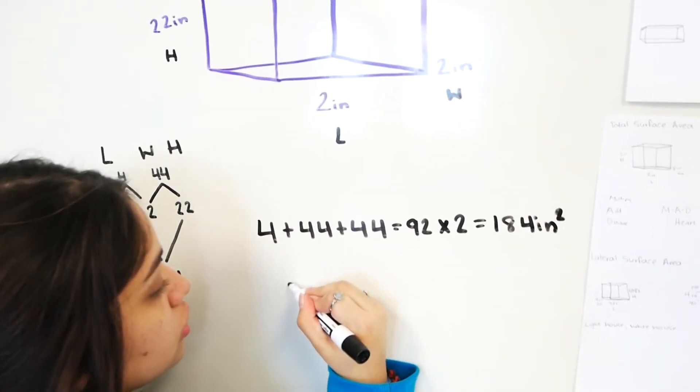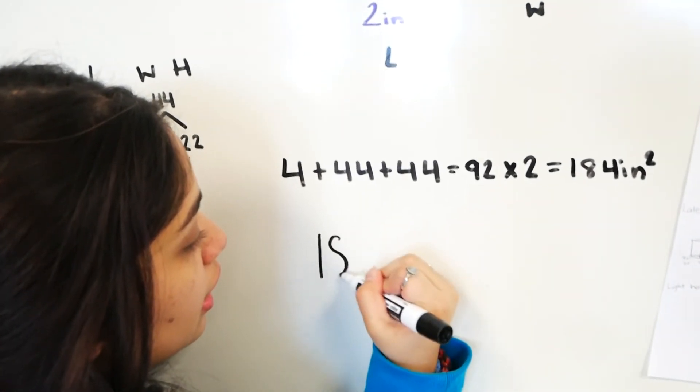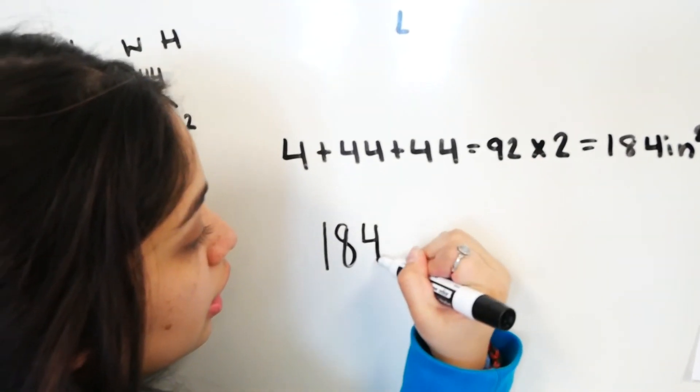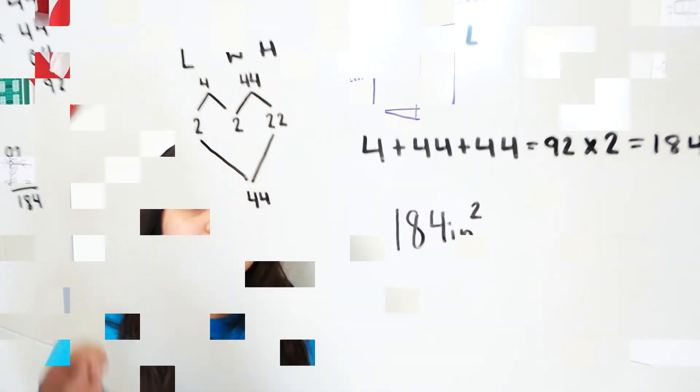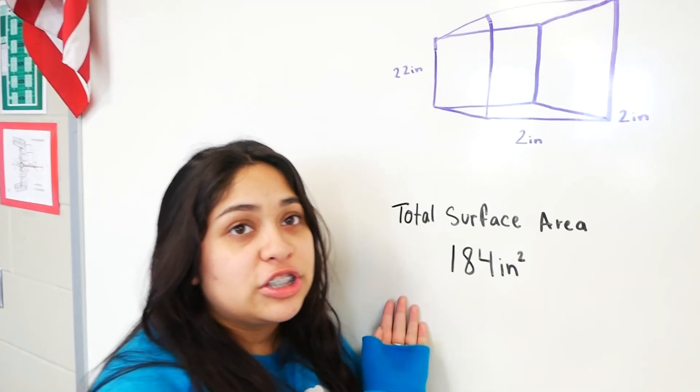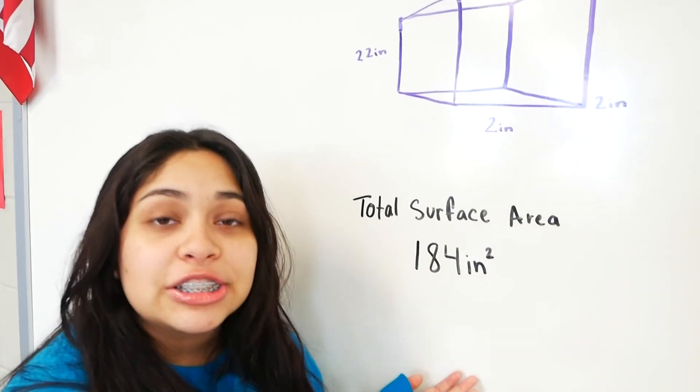Equals 184 inch squared. So your answer would be 184 inches squared. The total surface area of this cube would be 184 inches squared.